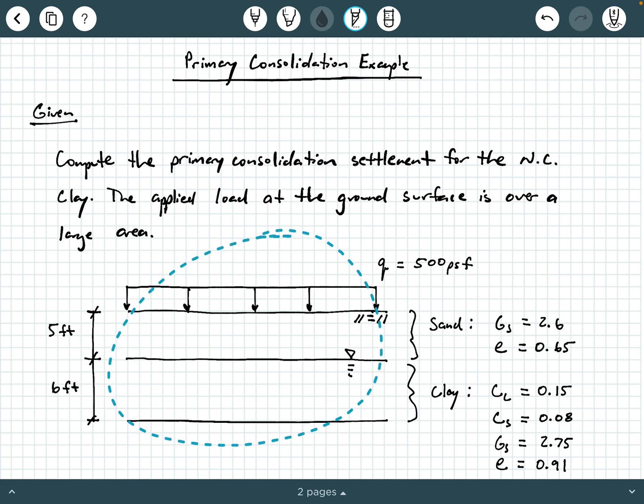So here we have our soil strata. The ground surface here is subject to this large surface load of Q equals 500 PSF. And then beneath the surface, the first thing we encounter is a 5-foot-thick sand layer with a specific gravity of 2.6 and a void ratio of 0.65. Beneath that, we then encounter a clay layer that is fully saturated. You can tell by the level of the water table here is at the sand-clay interface. That clay layer is 6 feet thick, and it has a C sub C value, which is the compression index of 0.15. It has a swell index of 0.08, it has a specific gravity of 2.75, and a void ratio of 0.91.